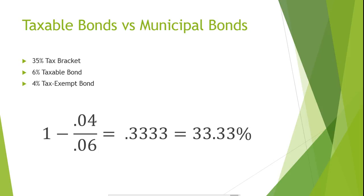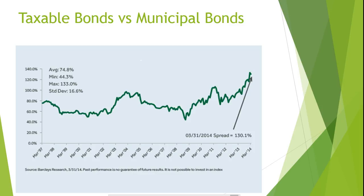Over the past 30 years, the tax-exempt to taxable yield ratios have fluctuated around 0.75, or 75%. This implies that an investor whose combined tax bracket is greater than 1 minus 0.75, or greater than 25%, will earn a greater after-tax yield by investing in municipal or tax-exempt bonds. It's important to remember that it is difficult to determine the difference in risk, so these comparisons need to be made relative to the riskiness of the bonds being compared.